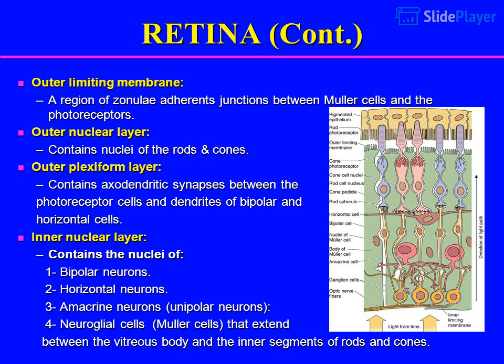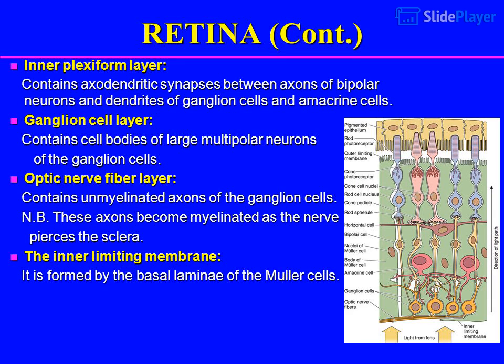Inner nuclear layer: contains the nuclei of 1. bipolar neurons, 2. horizontal neurons, 3. amacrine neurons (unipolar neurons), and 4. neuroglial cells — Müller cells — that extend between the vitreous body and the inner segments of rods and cones.